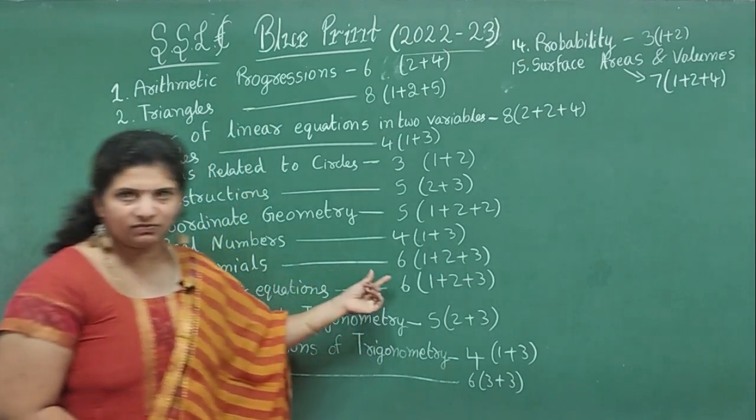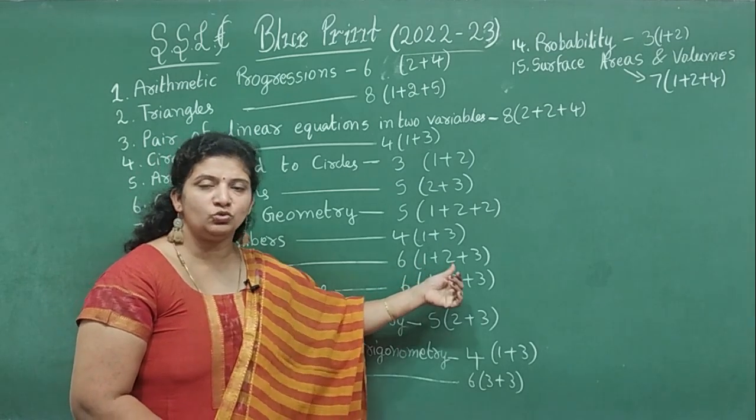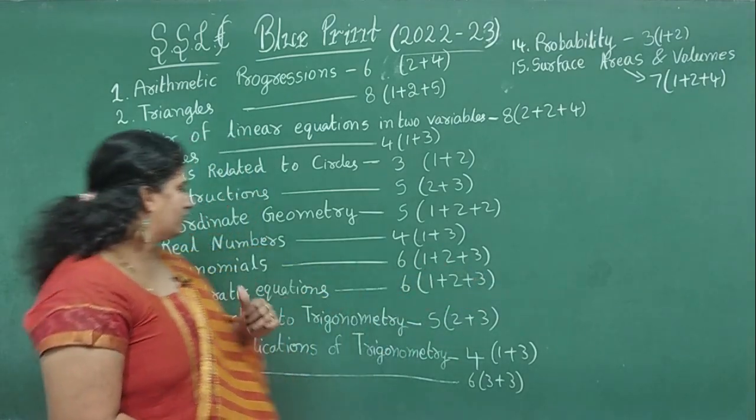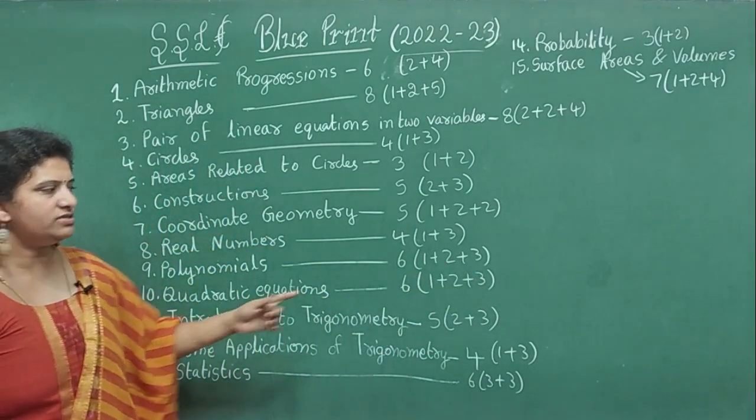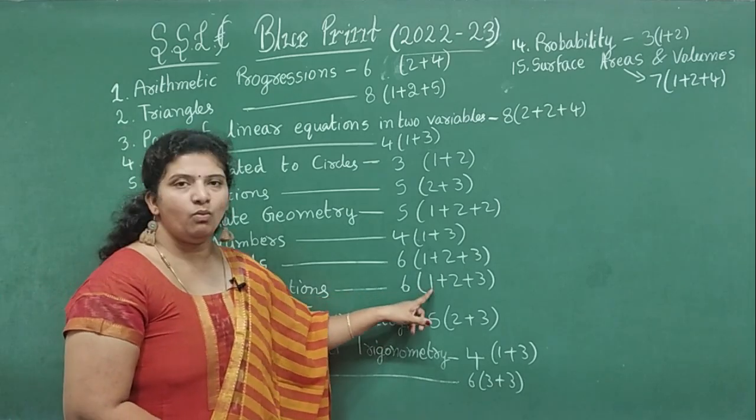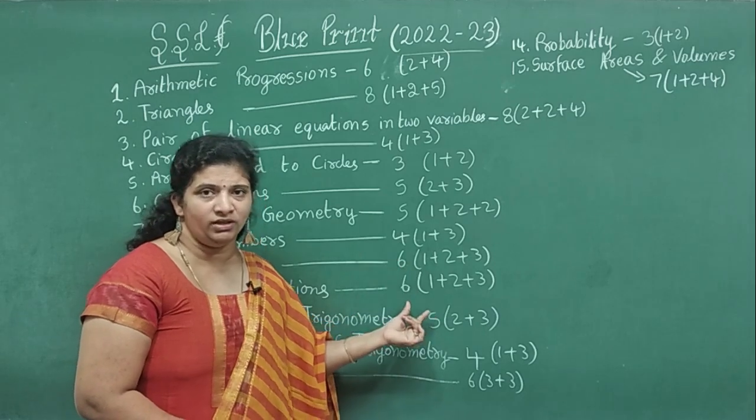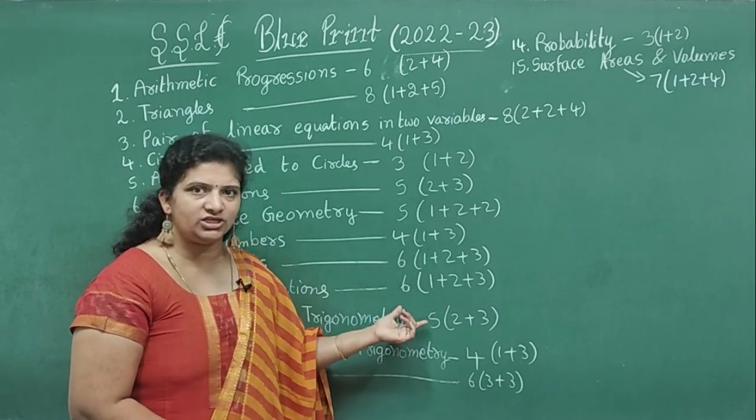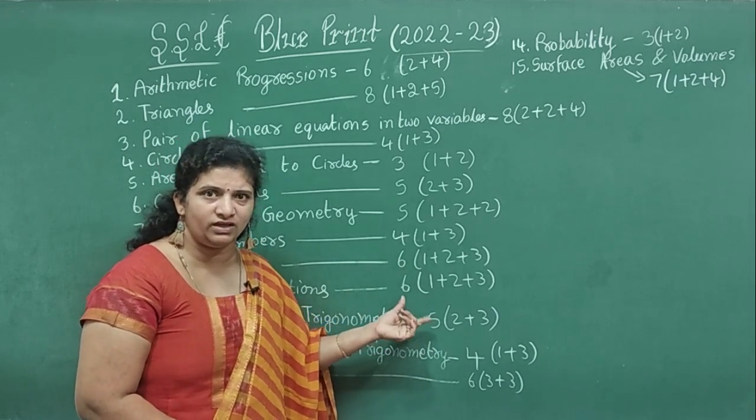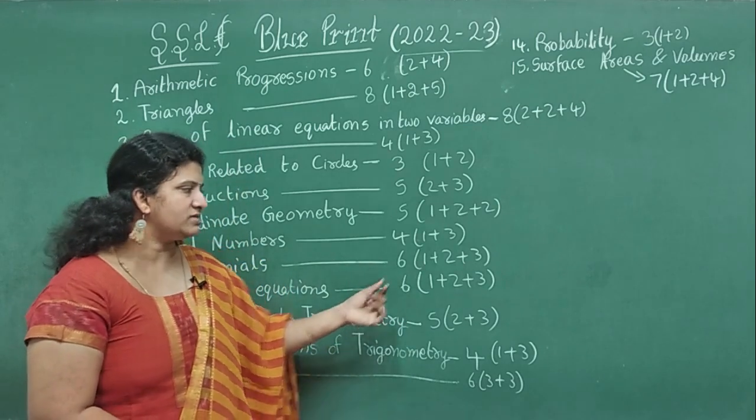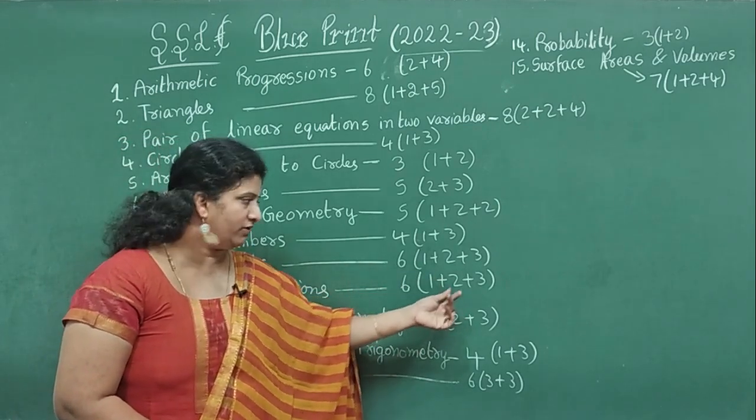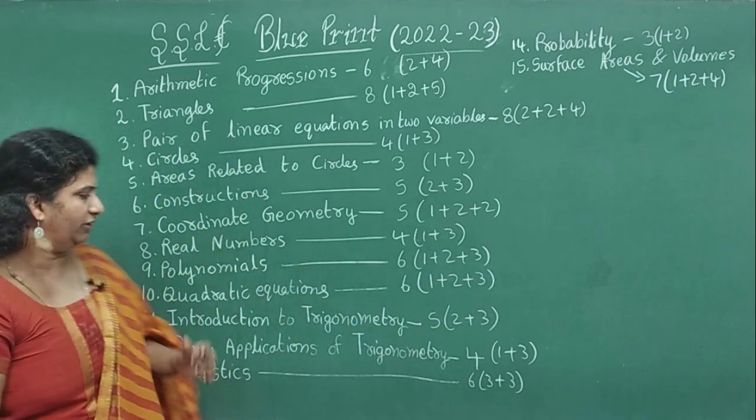Polynomials - 6 marks weightage: 1 mark, 2 marks, and 3 marks questions. Quadratic Equations - 6 marks weightage: 1 plus 2 plus 3. One mark may be any formula or simple question, or find the roots of the quadratic equation. Two marks - solve the equation. Three marks - verbal problem.